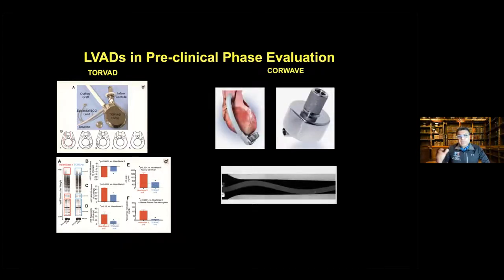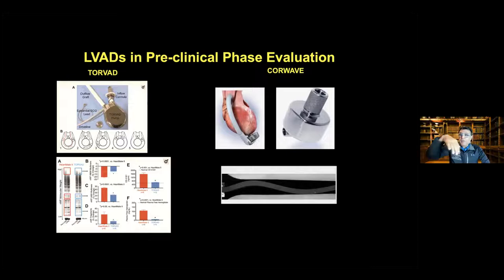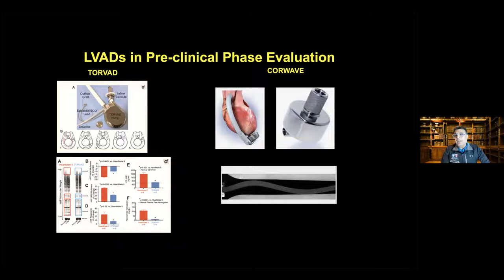A second device, the CoreWave, instead of using a rotor has a fishtail-like membrane that propels blood in a synchronous manner, capable of co-pulsation and even counter-pulsation with the heart as physiology demands. One challenge is that it's about 50% larger than even the HeartMate 3, limiting its applicability across all patient profiles. Like the Torvad, the CoreWave is about a year and a half to two years away from first-in-human experiments.